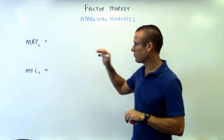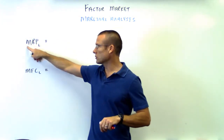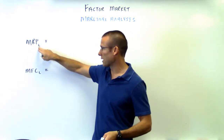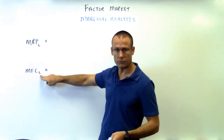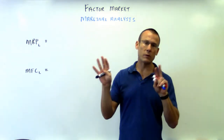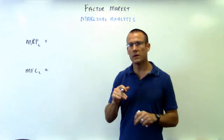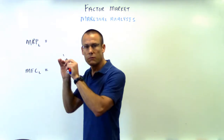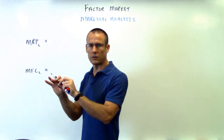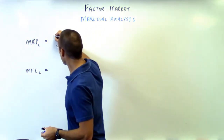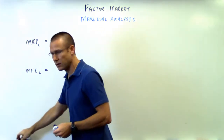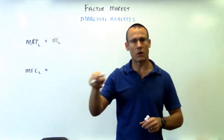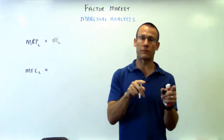For the factor market, what's so important are these two acronyms: marginal revenue product of some factor or resource. My default is always labor — so marginal revenue product of labor, and marginal factor cost of labor. The marginal revenue product of labor — how do we get that? It's the additional revenue we get from hiring another laborer. What we need to know is how many more products that laborer can make, and what tells us that is the marginal product of labor — the additional products we get from hiring one more laborer.